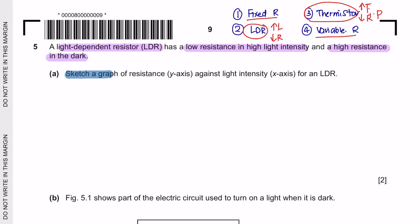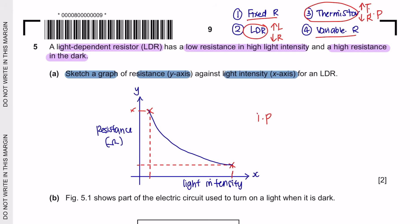Part 1. Sketch a graph resistance y-axis against light intensity x-axis. So when the light intensity is low, you've got a high resistance. And when the light intensity is high, the resistance is low. So you will get an inversely proportional graph, which looks like this.